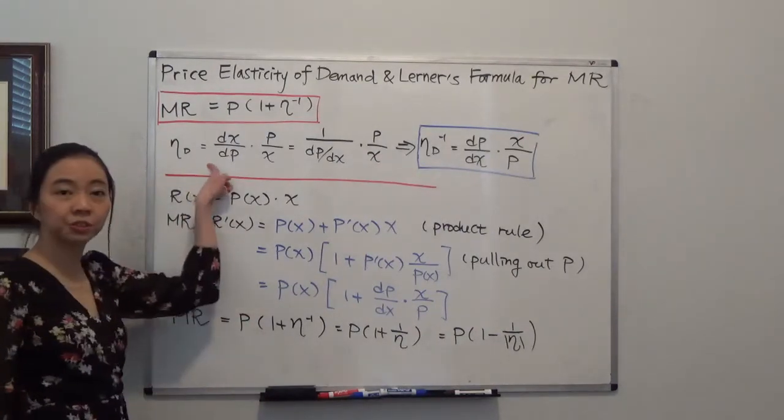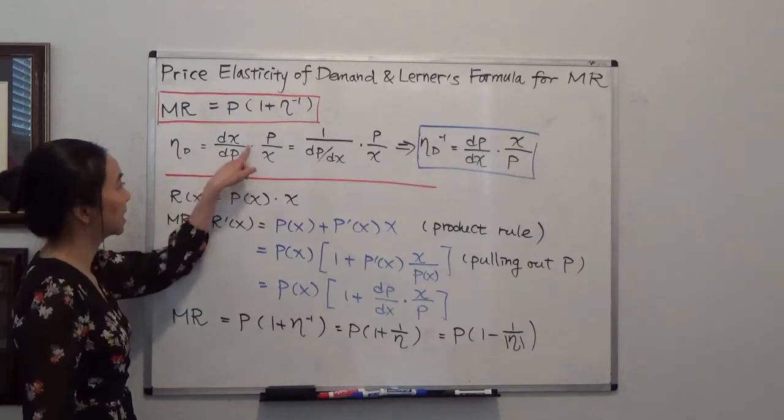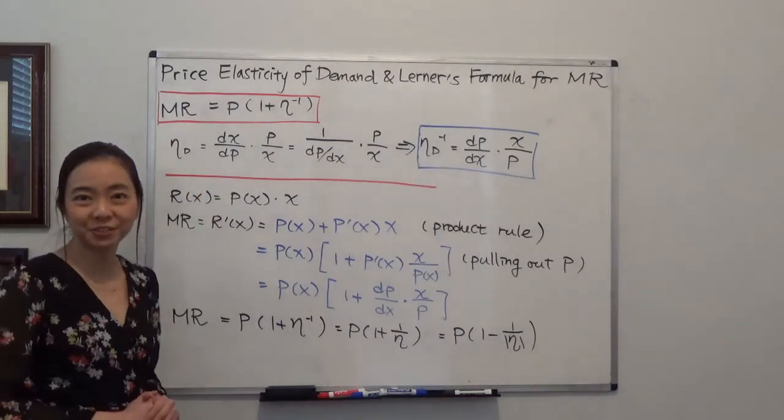By definition, it's equal to dx/dp times p over x, where x is the quantity demanded.